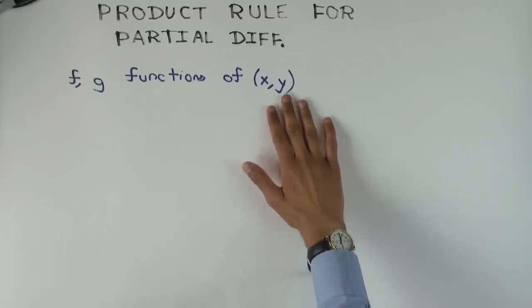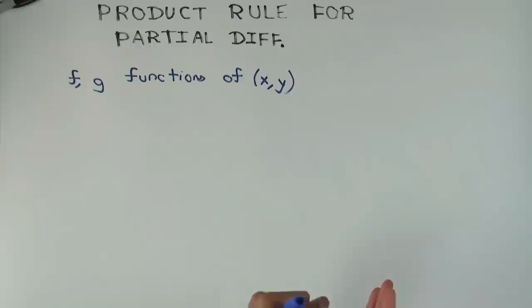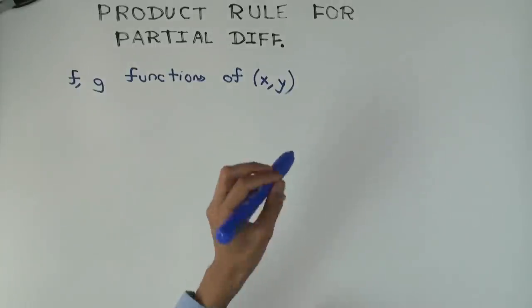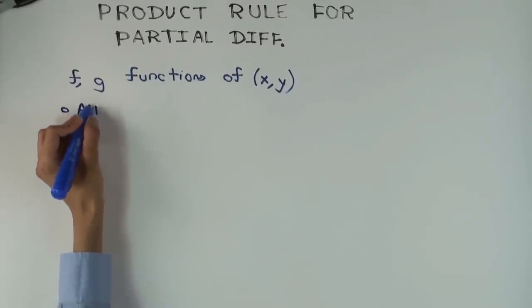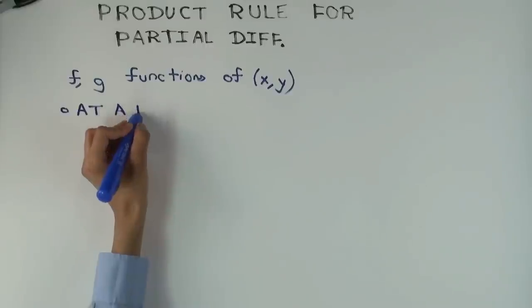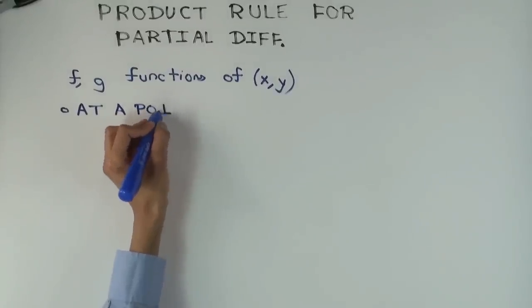So f and g are both functions of two variables with real values, and I'm going to consider a point. So I'm going to first define the partial derivative at a point, and a point could be something like x naught y naught.